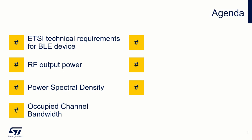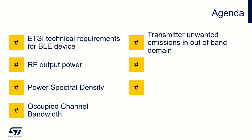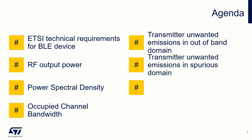In addition, besides the wanted signal, the device also produces interfering emissions. These are measured in two categories: in the out-of-band domain and the spurious domain.